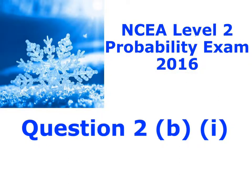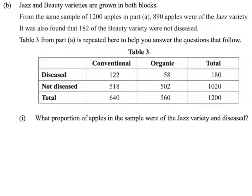Here is question 2b, part 1. So we've got some more information about apples. We are told that from the same sample of 1,200 apples that we had in part A, there are 890 apples that were Jazz apples. And we're also told that there are 182 of the Beauty variety that were not diseased.